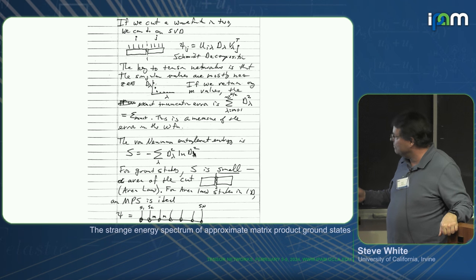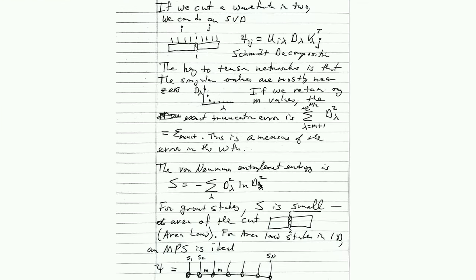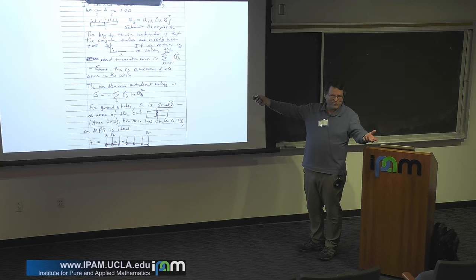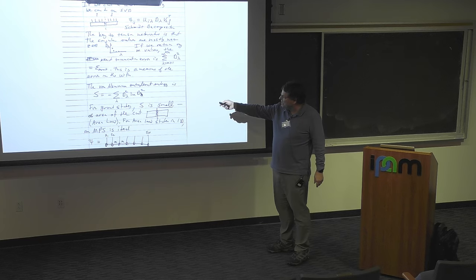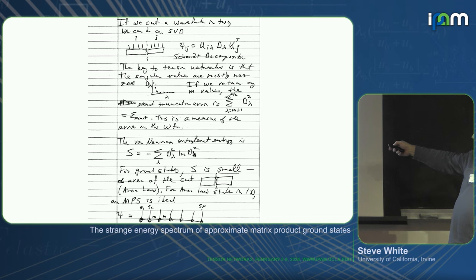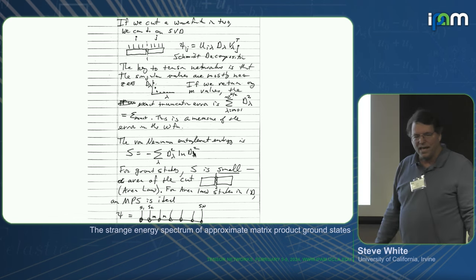If we cut a wave function in two — this is the full wave function, not in matrix product state form — we do an SVD through the two degrees of freedom on the left and right. This is called the Schmidt decomposition. We look at the singular values. The key to tensor networks in general is that the singular values are mostly near zero and can be neglected. In practice, we keep M values, and an important thing is that the exact truncation error is the sum of all the singular values squared that we throw away.